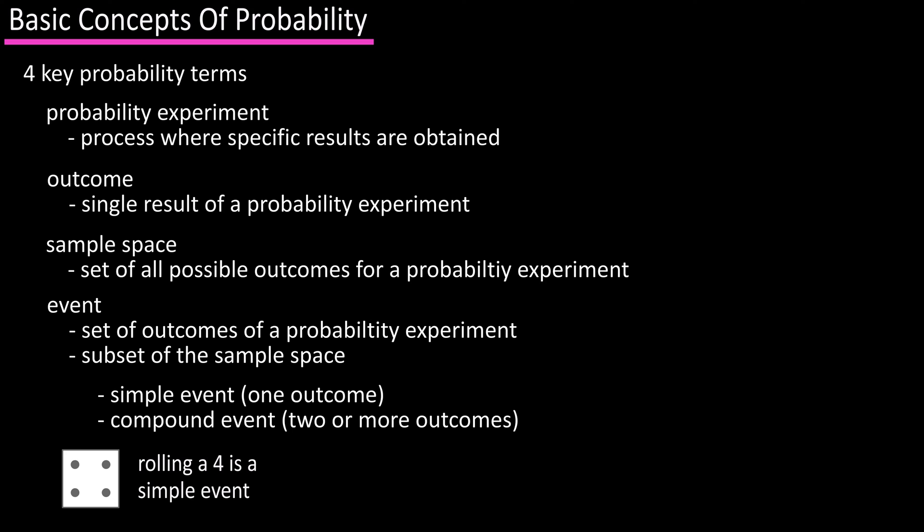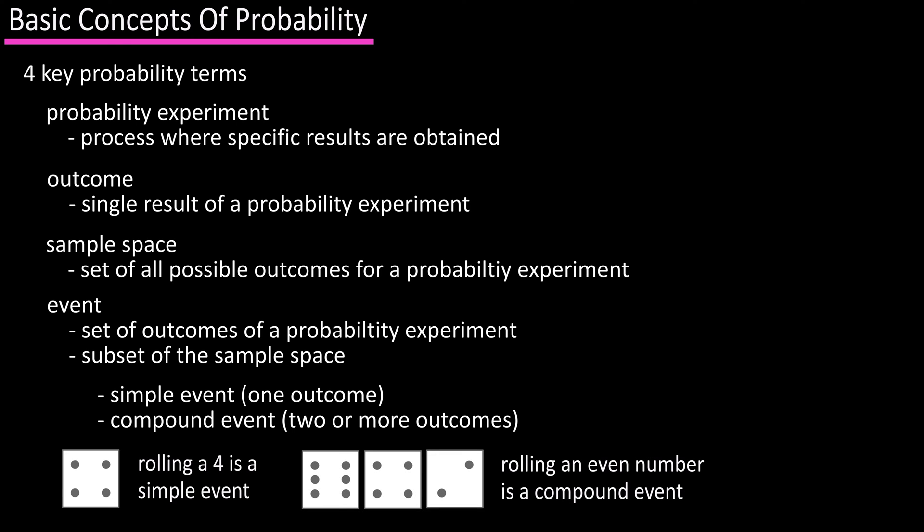For instance, the event of rolling a four on a die roll is a simple event, and the event of getting an even number on a die roll is a compound event.